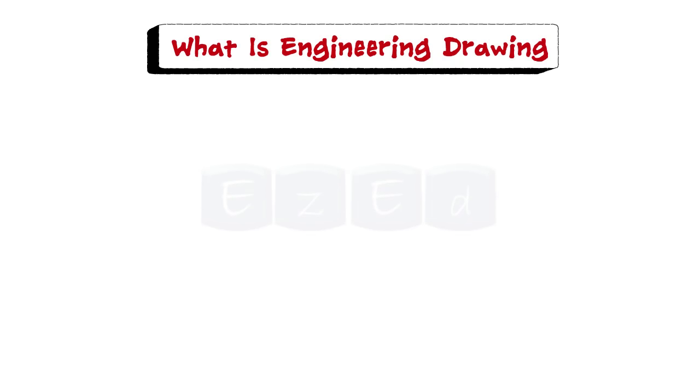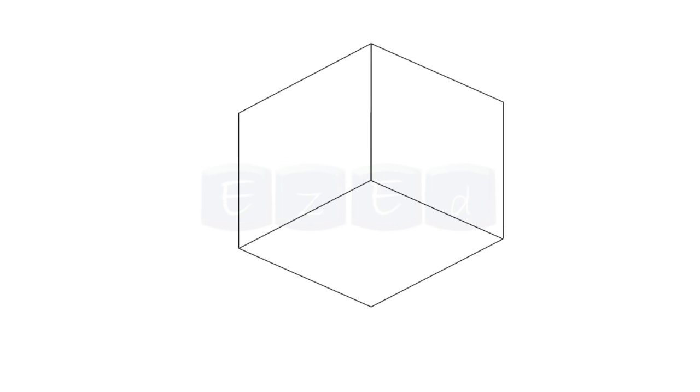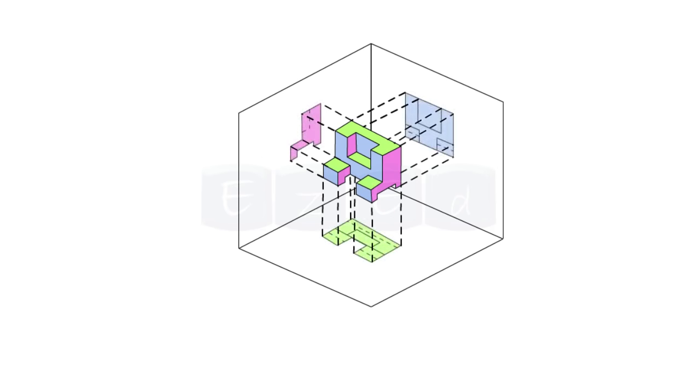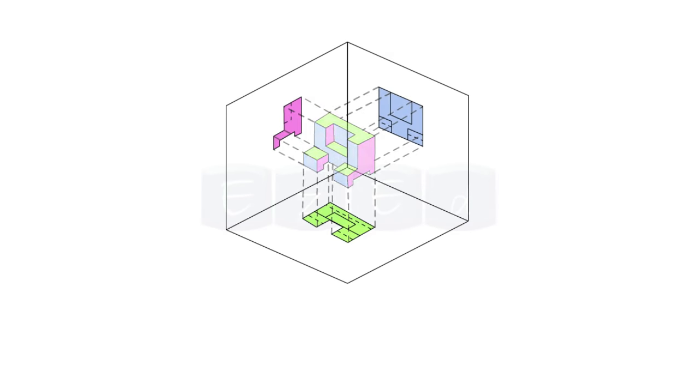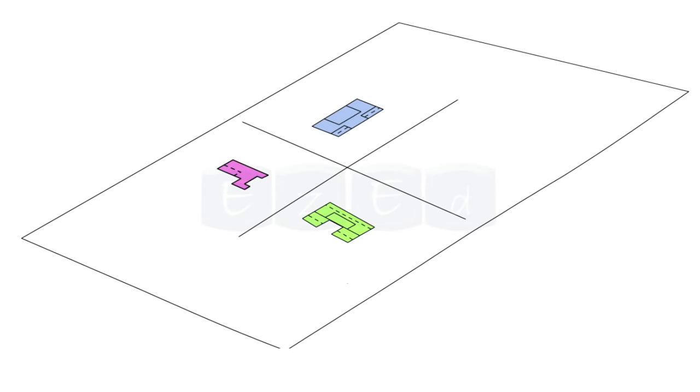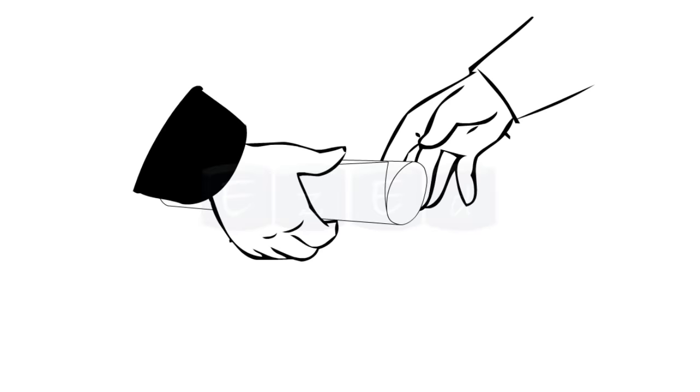First we will see what is engineering drawing. Engineering drawing is a type of technical drawing which is used to clearly define the requirements for engineered items such as views, dimensions and necessary information. More than drawing pictures, it is also a language, a graphical language that communicates ideas and information from one mind to another.